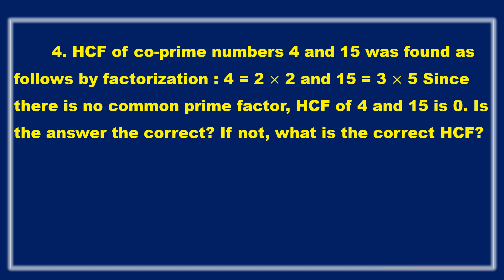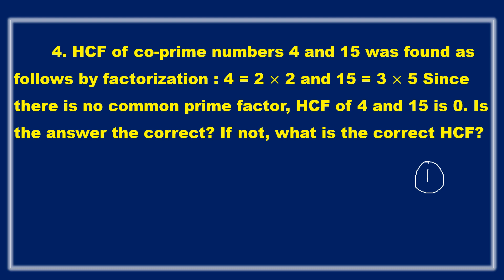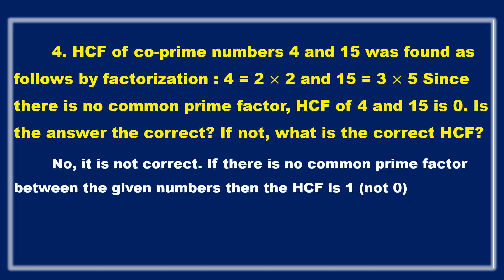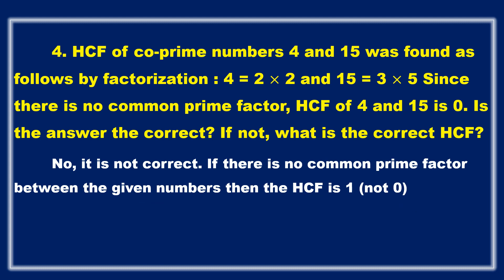Always remember: any two co-prime numbers will have 1 as their common factor — the meaning of co-prime itself tells us this. So for 4 and 15, the HCF is 1, not 0. If there is no common prime factor between the given numbers, the HCF is 1, but never 0. HCF will not be 0 in any situation.